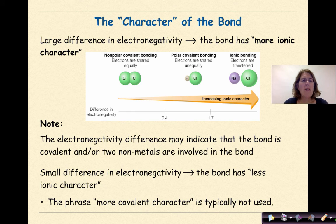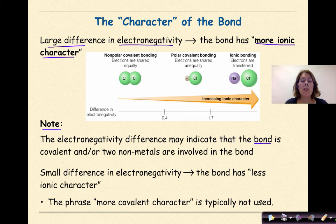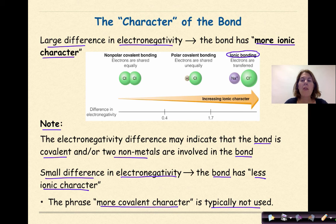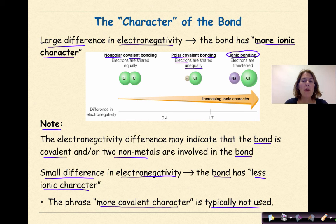If there's a large difference in electronegativity, the bond has more ionic character — note the electronegativity difference may indicate a covalent bond even if two nonmetals are involved. A small difference in electronegativity means the bond has less ionic character. The phrase 'more covalent character' is typically not used. An ionic bond has the greatest ionic character; polar covalent bonding involves unequal sharing of electrons.